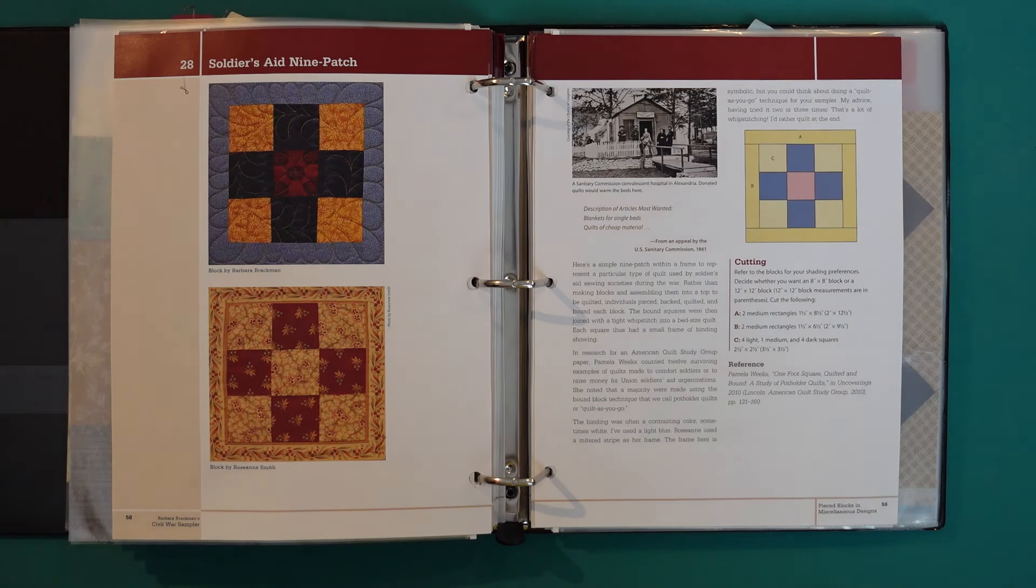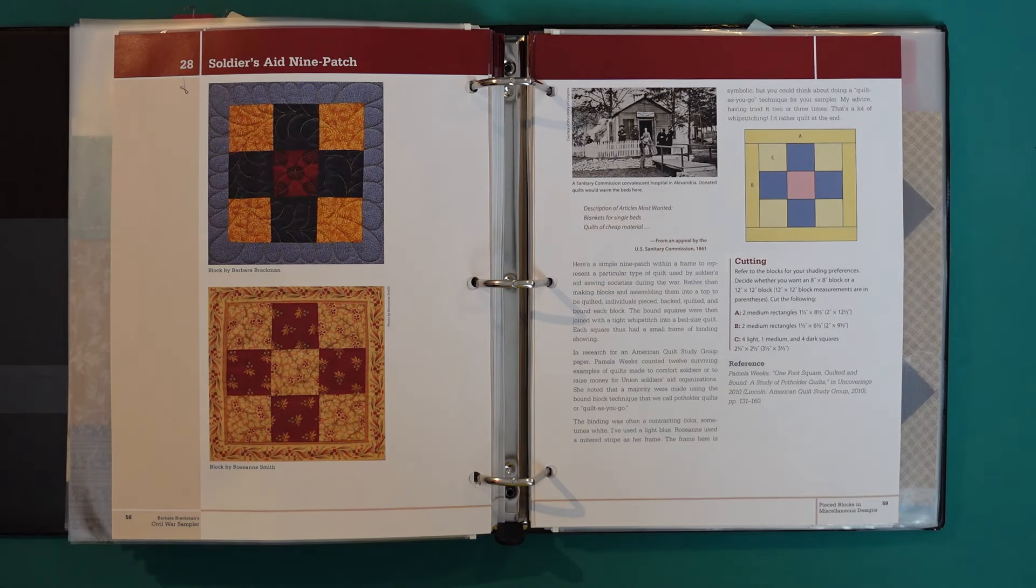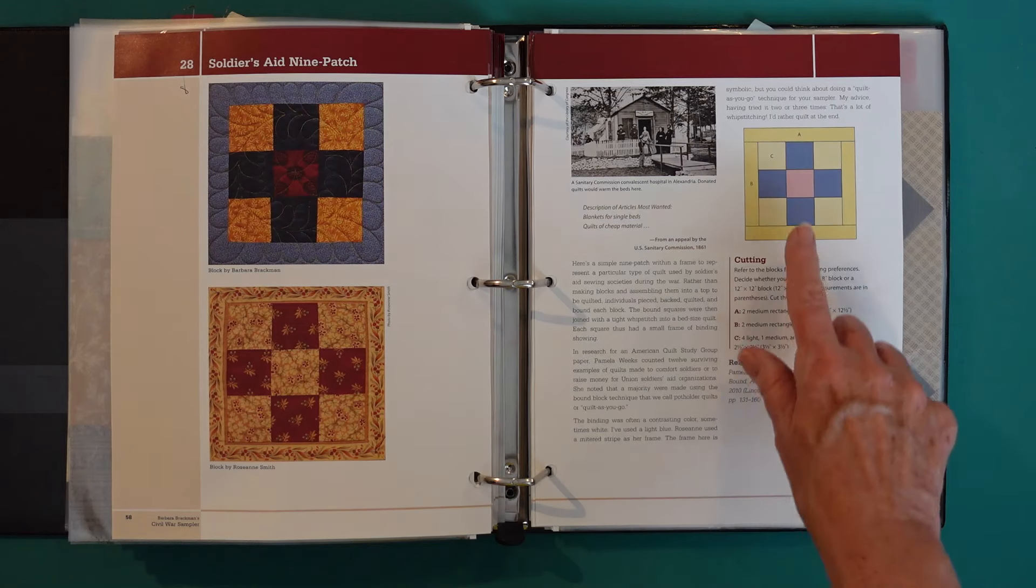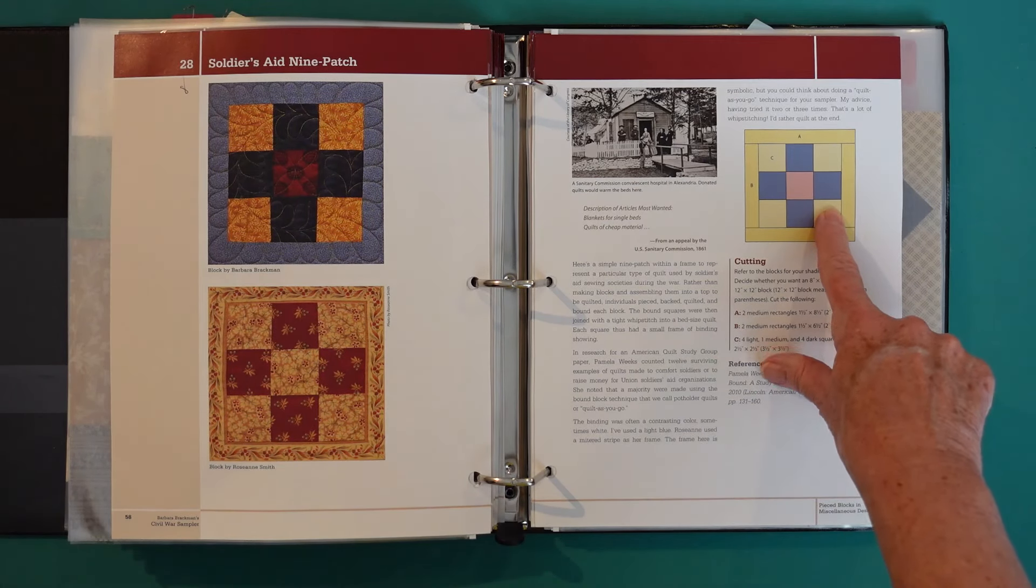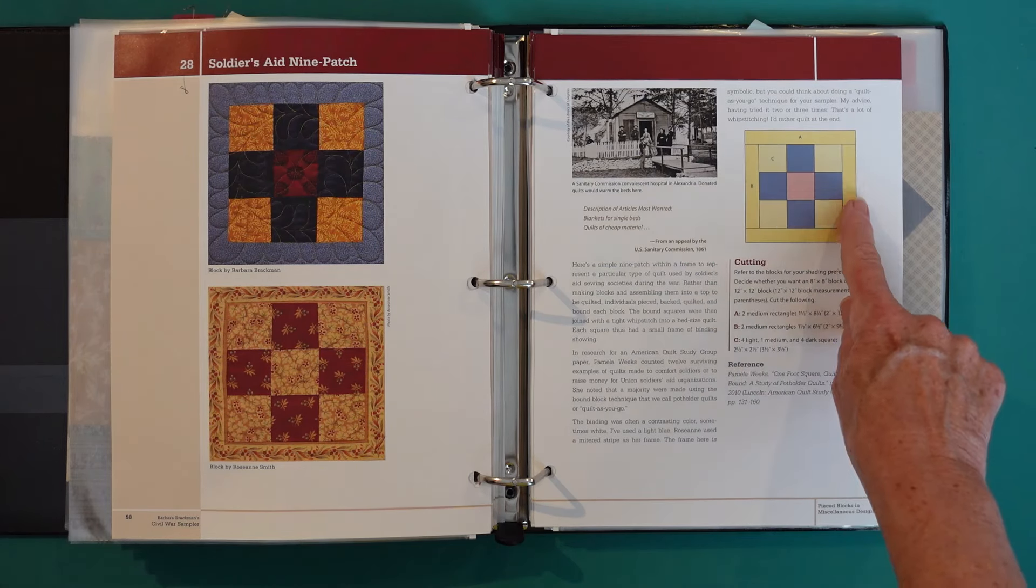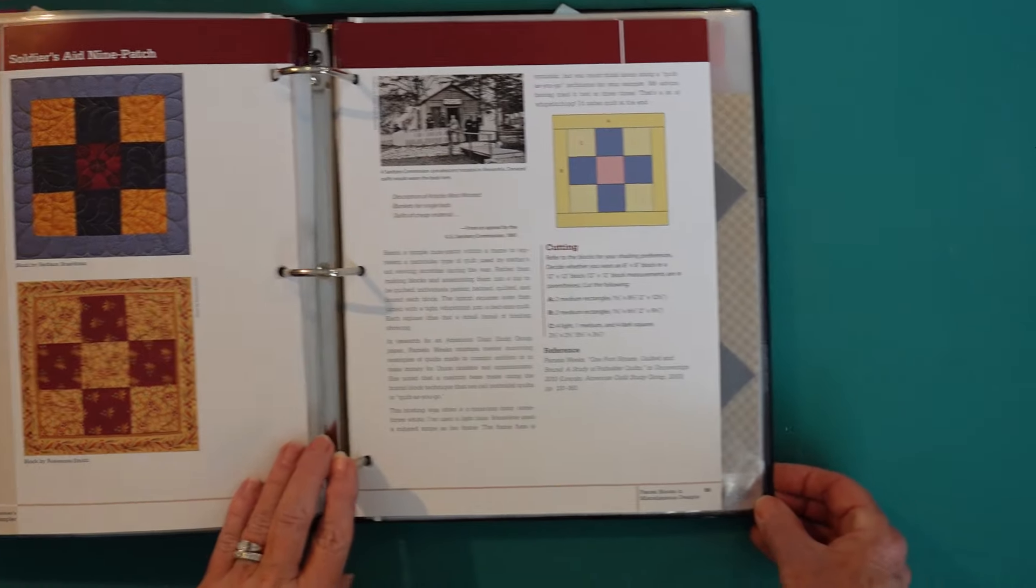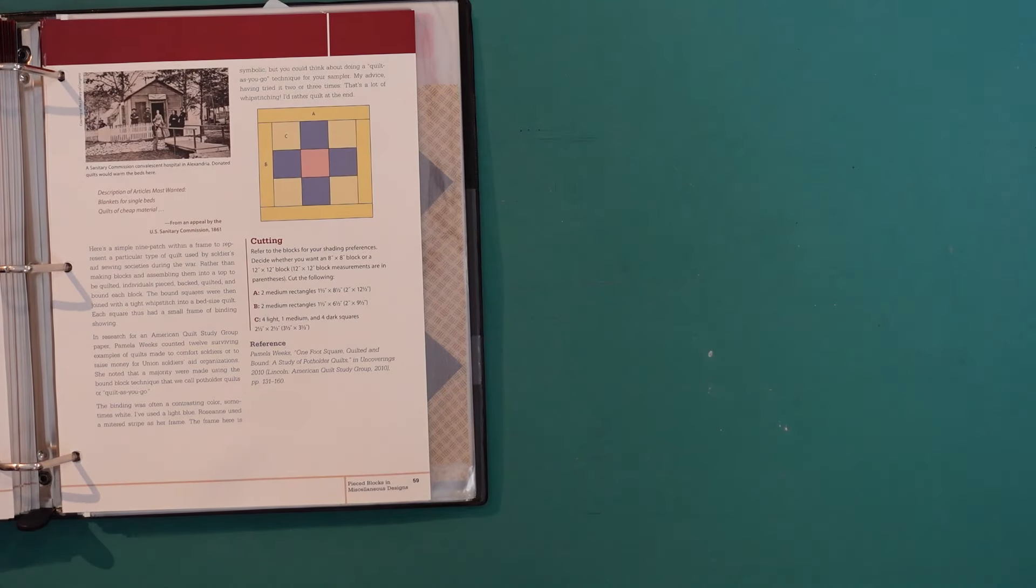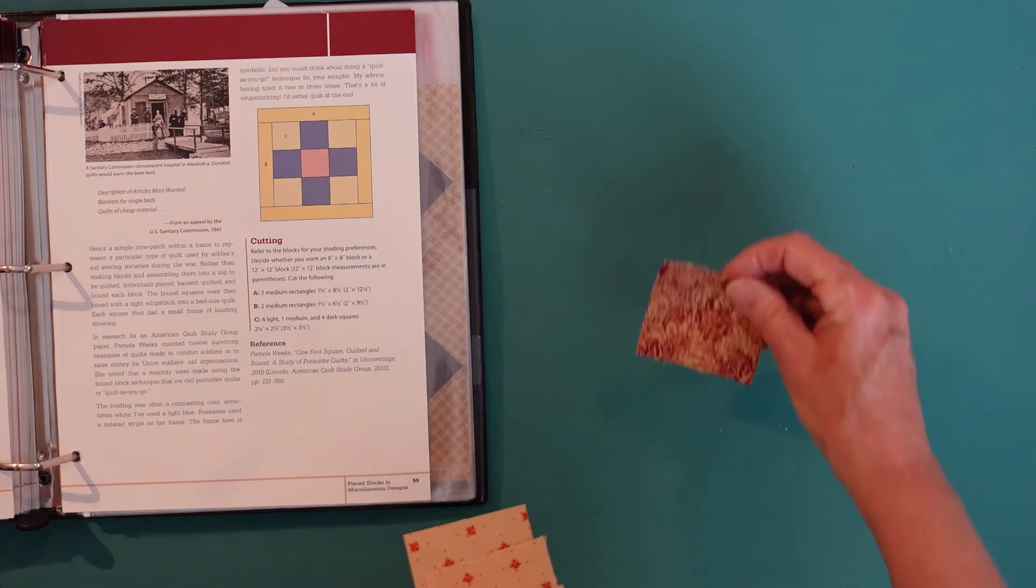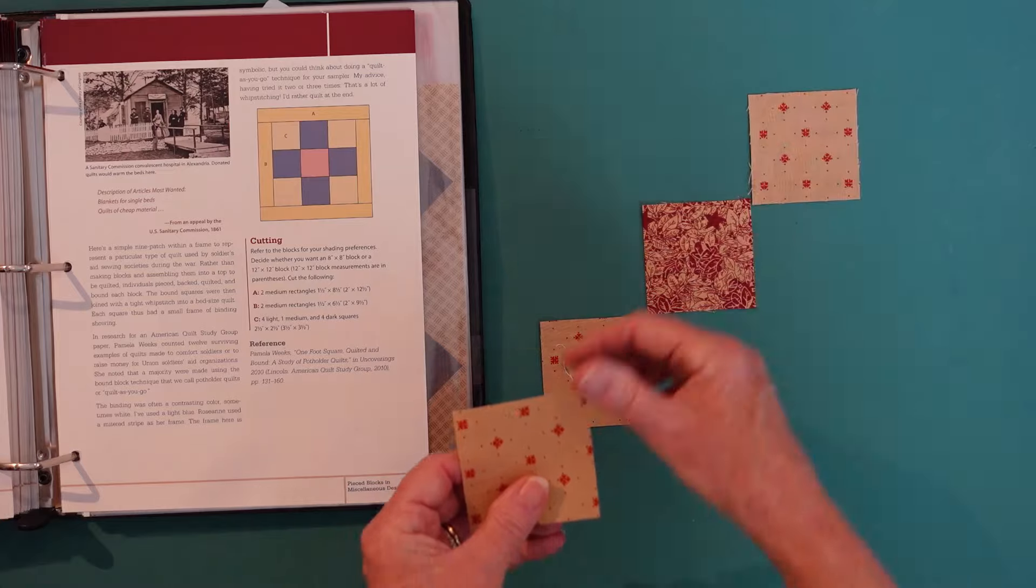The Soldiers Aid nine patch block is number 28 in your book and this, in my opinion, is the easiest way to take the blocks that are divided into three units and turn them into an 8 inch finished block. We've done 2 inch finished squares for your nine patch block, so that would be 2, 4, 6, and then a 1 inch border the whole way around brings it up to the 8 inch finished size. So it's super easy to put together. All you have to do is choose one square to be your center and then you can put your lighter squares around that.